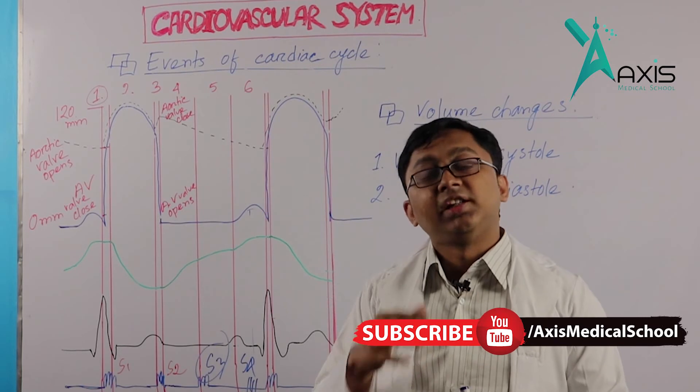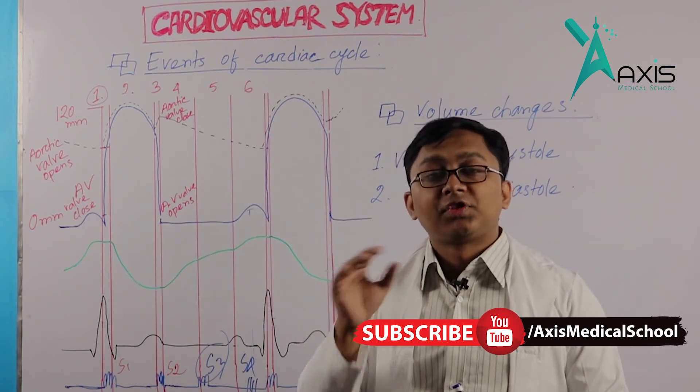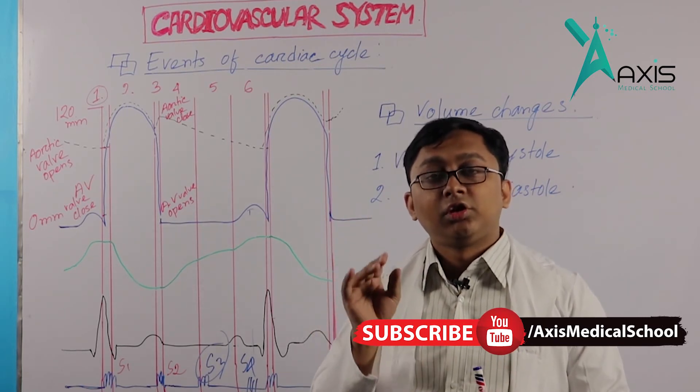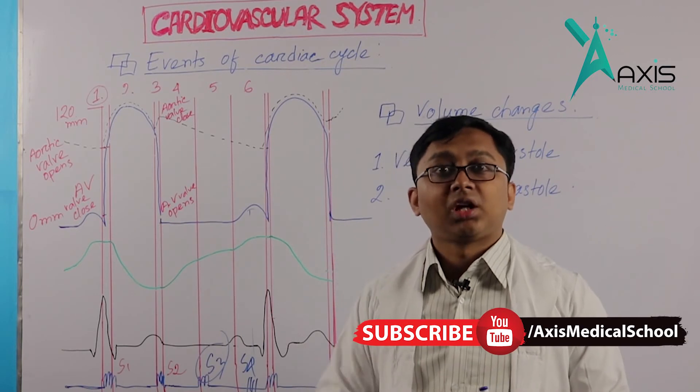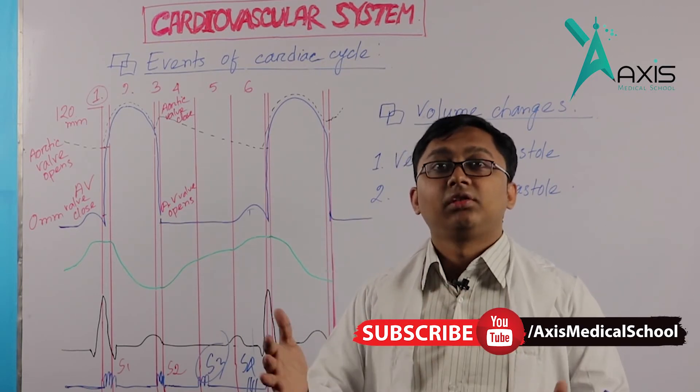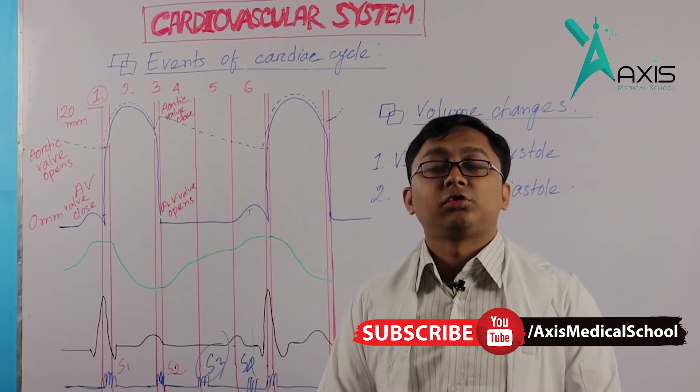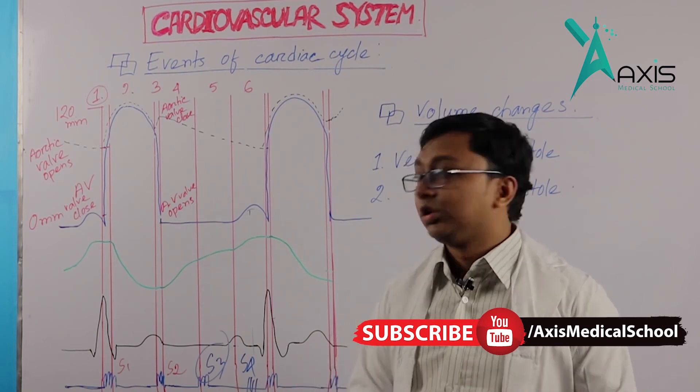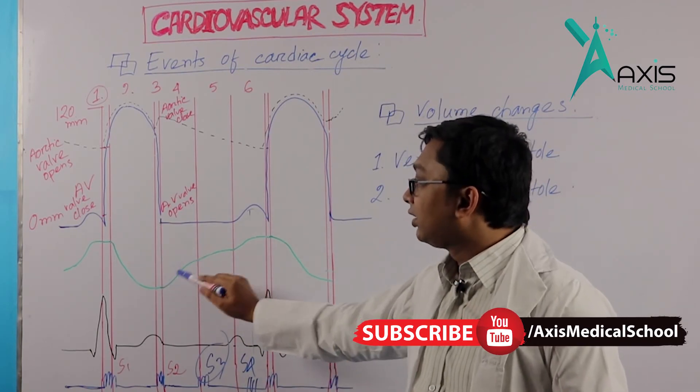Third, considering the left ventricle, the mitral valve opens. Blood from the left atrium rapidly rushes towards the left ventricle. Then, ventricle volume rises.